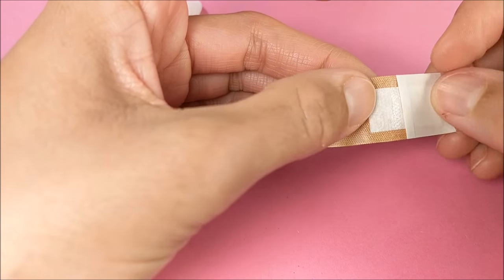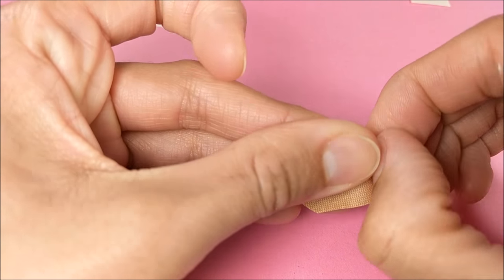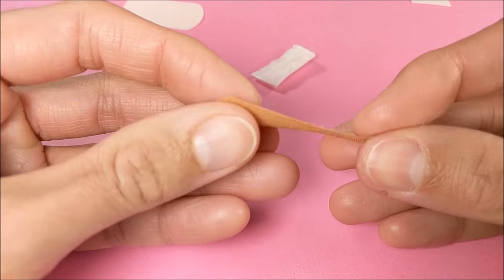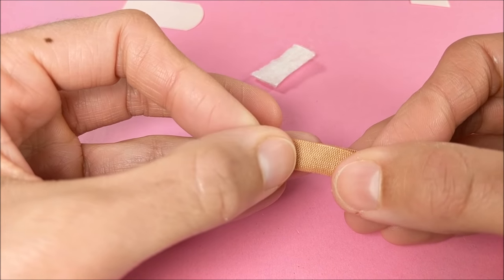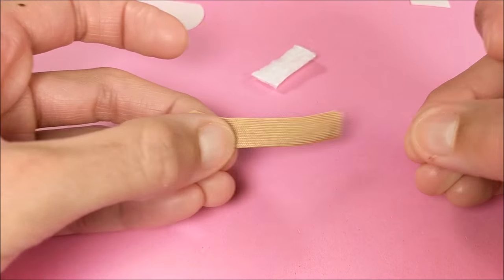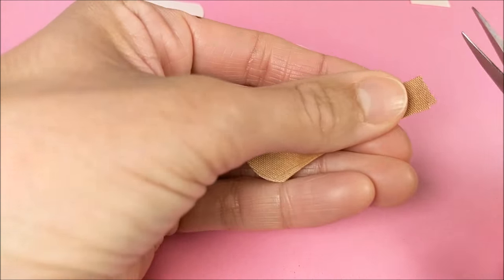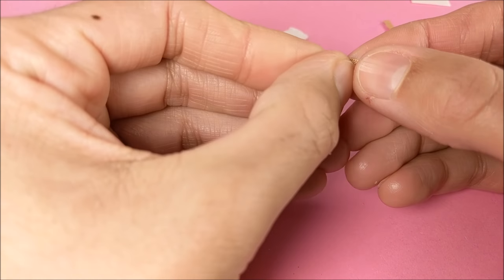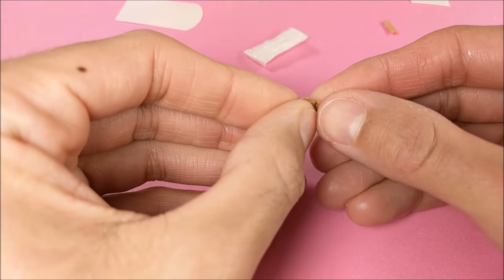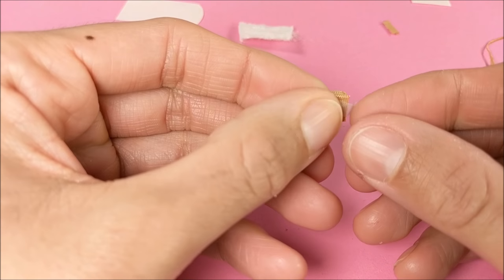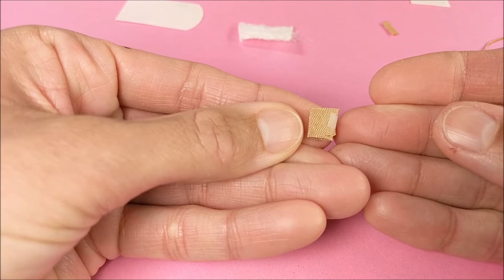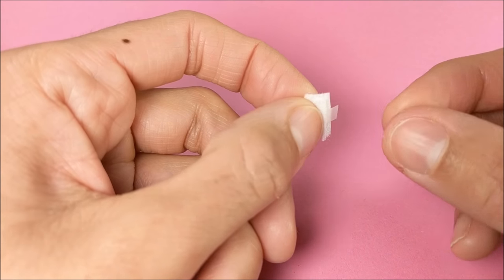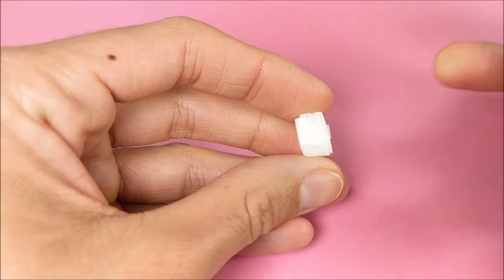With the leftover band-aid, I pull off the fuzzy section to use as my gauze. Then I fold the rest of the band-aid in half, trim as needed, and wrap it up for the cloth material you often find in first aid kits. I'm just trimming that fuzzy stuff from the band-aid, folding over, and taping.